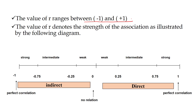The value of r denotes the strength of association as illustrated by the following diagram. I will try to make you understand this in a very easy way.